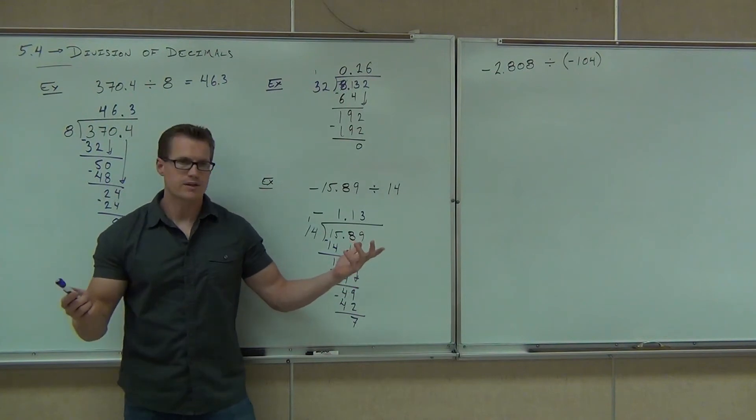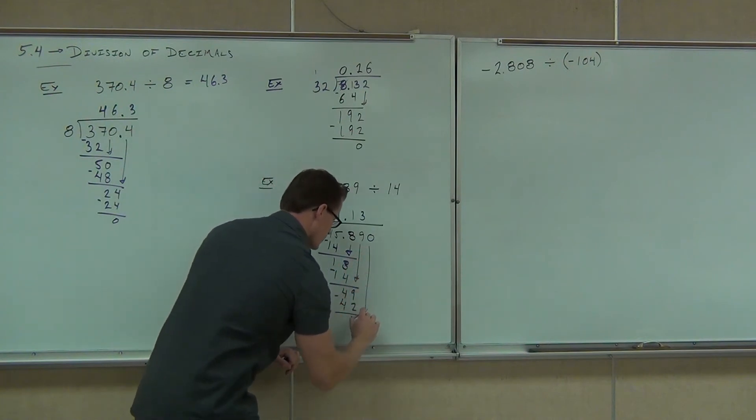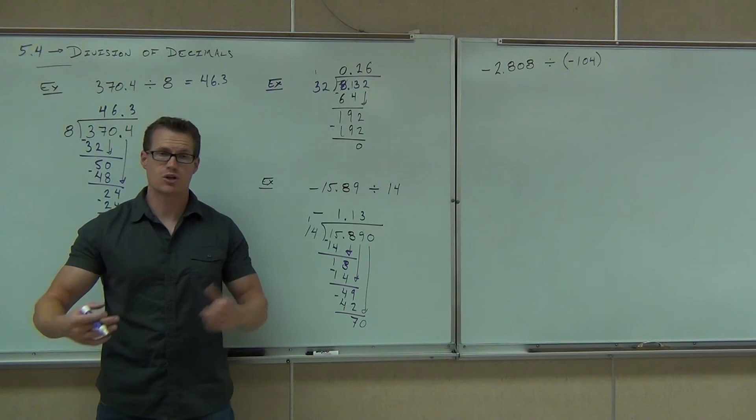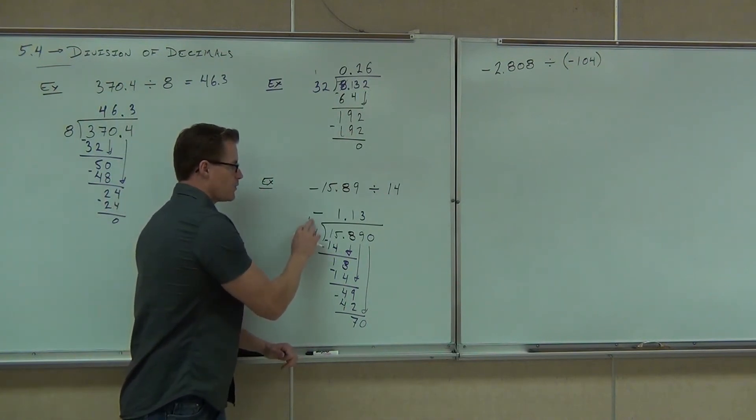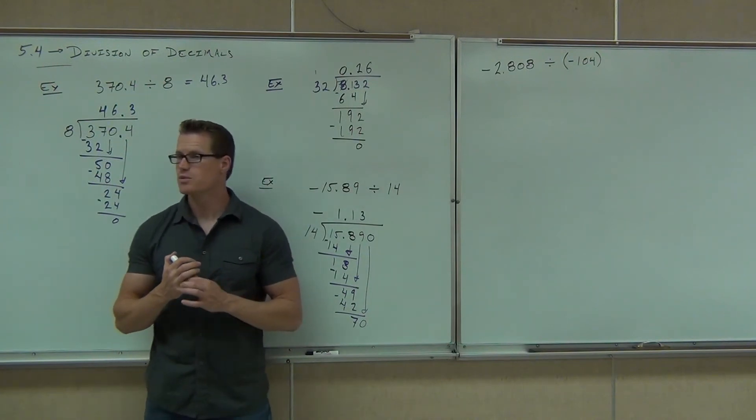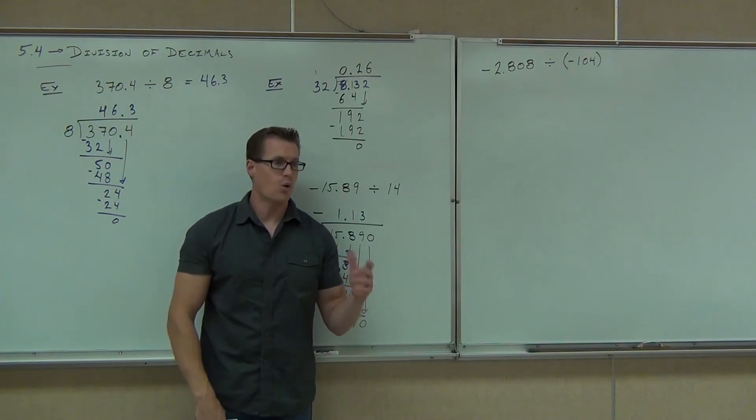What we can do with decimals, we can put zeros at the end of numbers. It doesn't change it, right? Let's add some zeros on this thing. If we put a zero at the end of this problem, we can now bring a zero down and continue our problem for as long as it takes, if necessary. So in decimals, you never have a remainder? In decimals, you never have a remainder. You'll just continue going until you find an answer or until you get a repetition.